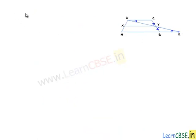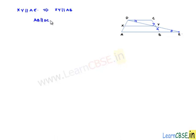Now for the second proof. From the above proof we achieved that XY is parallel to AE and XY equals half times AE. Since XY is parallel to AE, XY is also parallel to AB. In trapezium ABCD it is given that AB is parallel to DC. Therefore as XY is parallel to AB and AB is parallel to DC, we can say XY is parallel to DC. Since XY is parallel to DC, the quadrilateral DCYX is a trapezium. This completes the second proof.